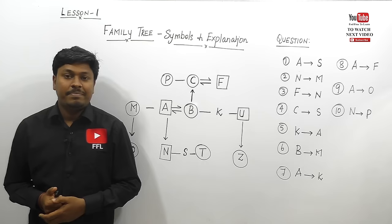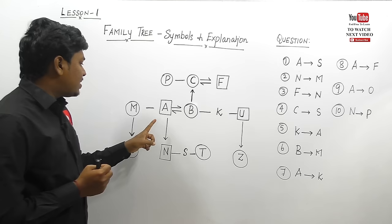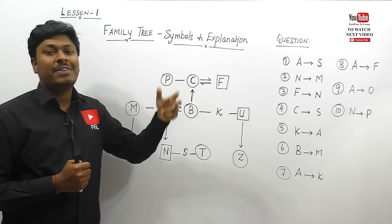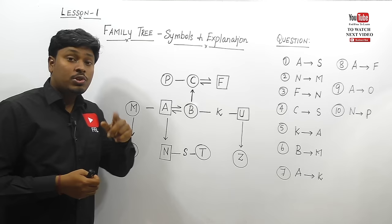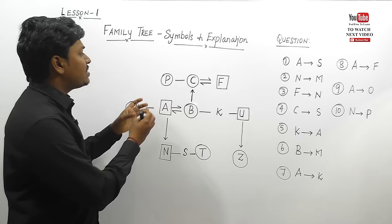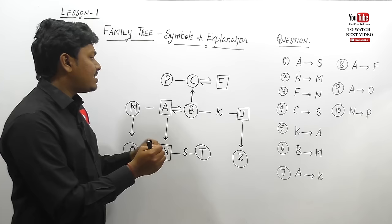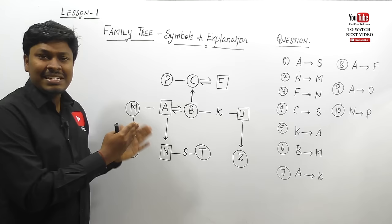Now let me move on to some interesting tree diagrams. Using all the symbols, I have drawn a small family tree. The special symbol denotes husband and wife; an up arrow denotes father, mother, or uncle; a down arrow denotes son or daughter. Two up arrows denote grandfather or grandmother; two down arrows denote grandson or granddaughter.